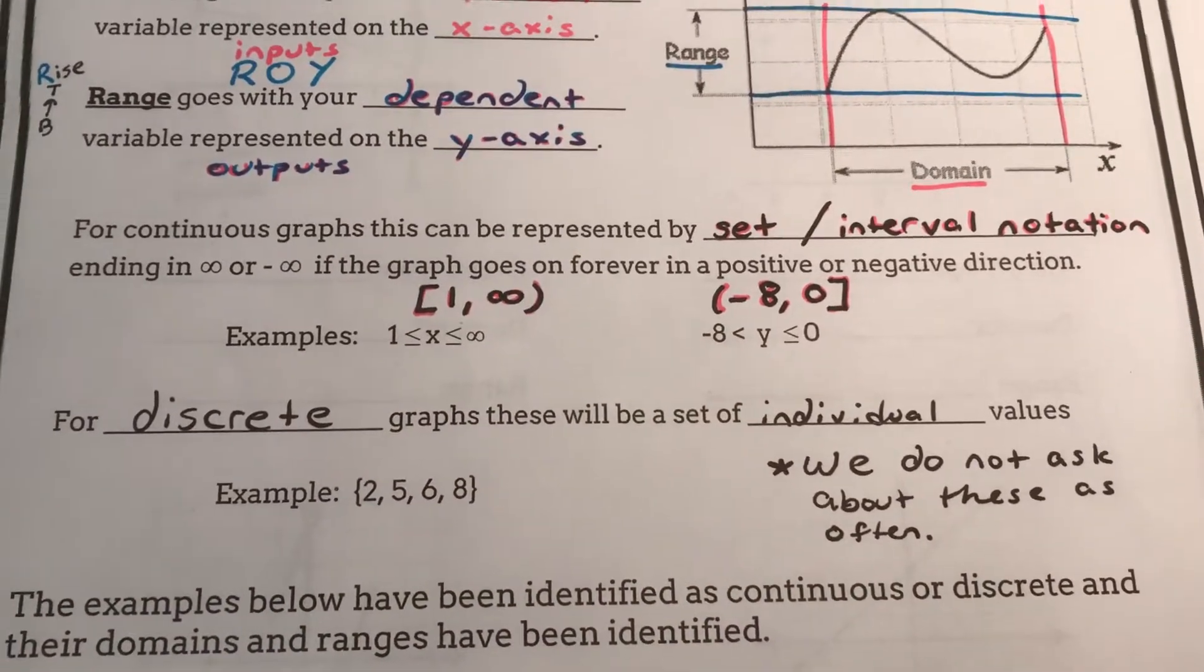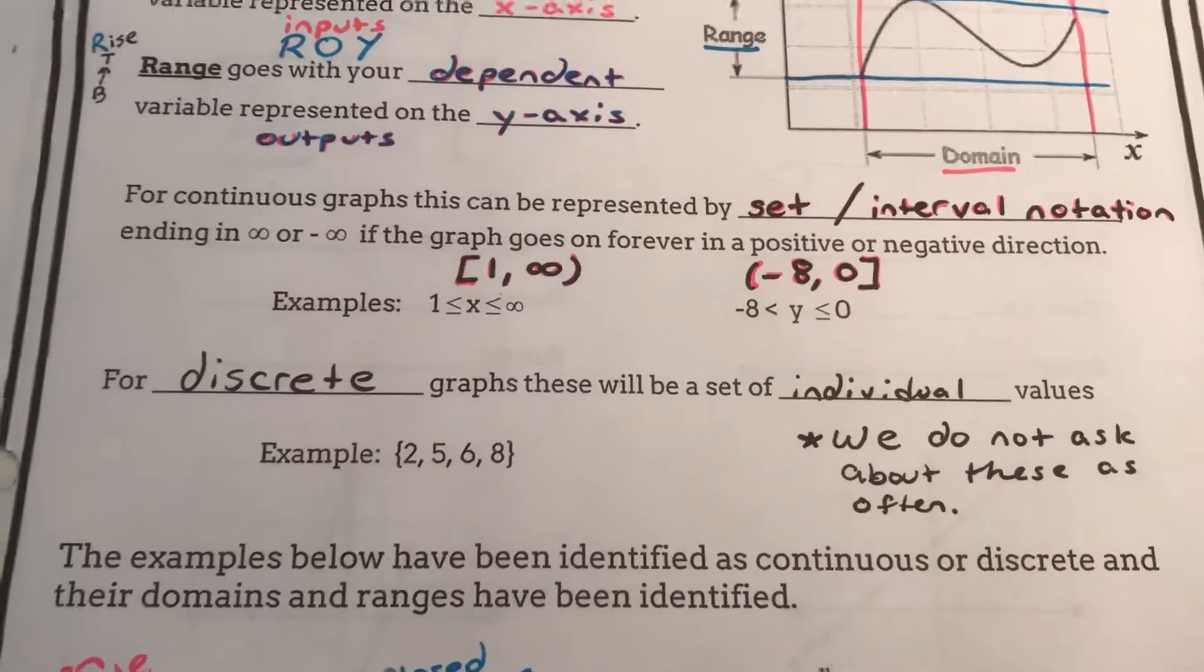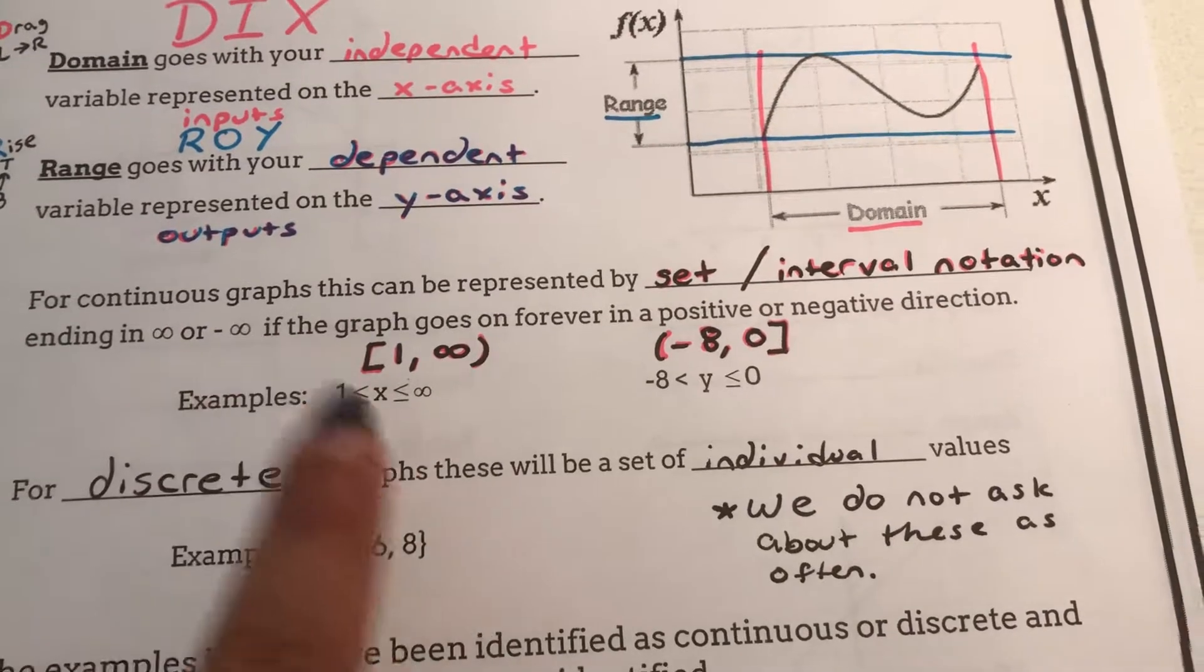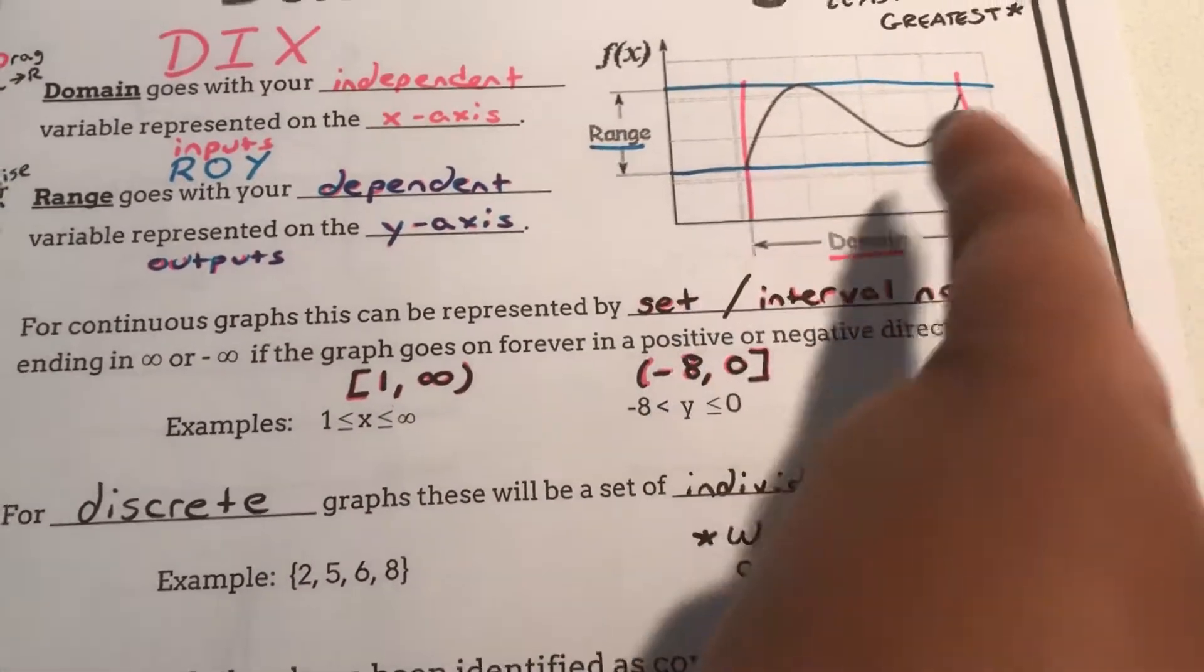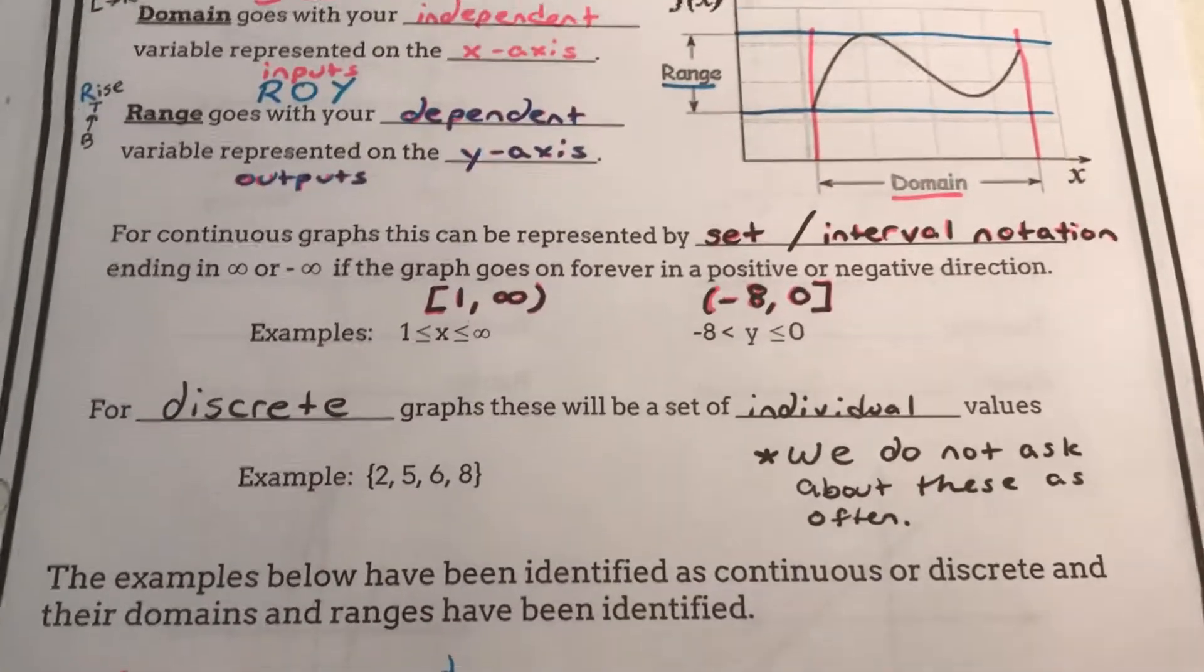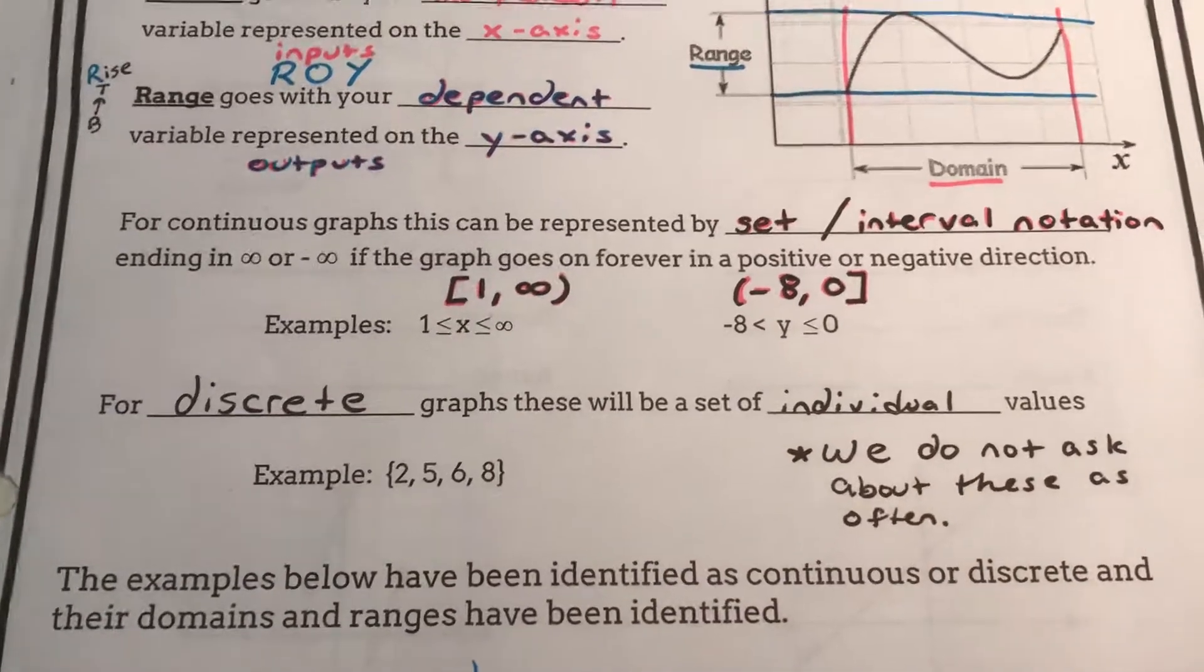More notes on this are available on Google classroom. For continuous you might see negative infinity or infinity or you might see clear starting and ending points on a graph. However for discrete you will just list the independent x and y values.